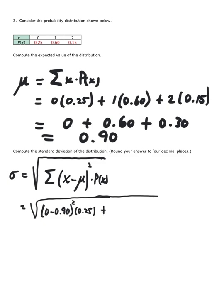then we move over to the next x value of 1. 1 minus the mean we found in part A, quantity squared times the probability in column 2, which was 0.60. Plus, the next x value is 2 minus the mean from part A times its probability, 0.15.